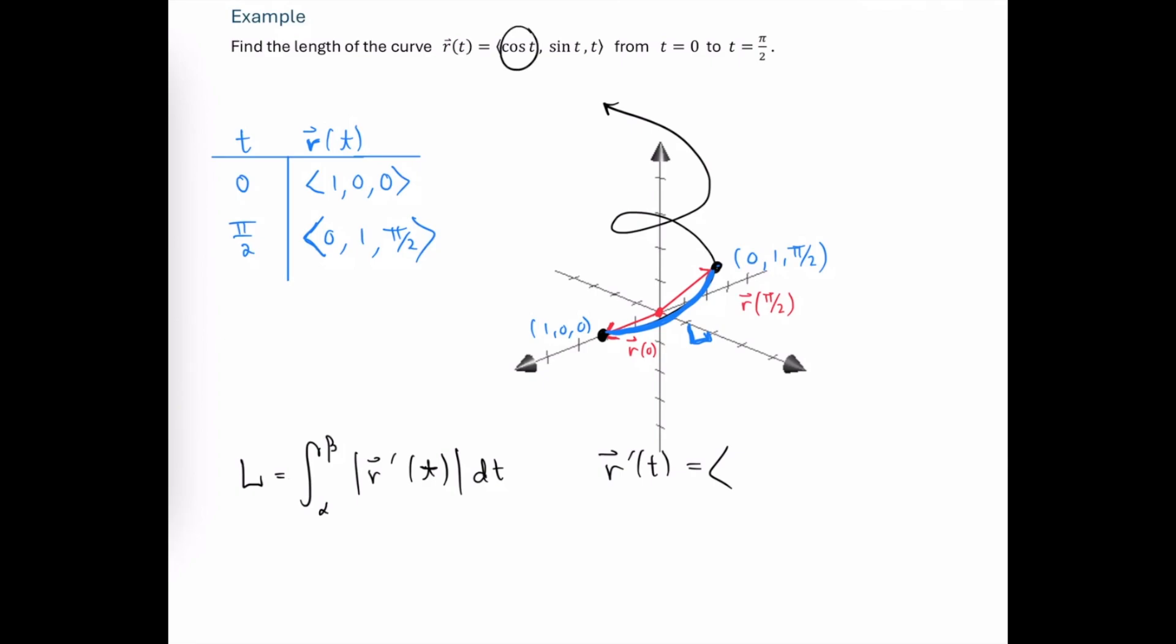So we're going to take the derivative of each of the individual components. The derivative of cosine is minus sine. The derivative of sine is cosine. And the derivative of t is just going to be 1.